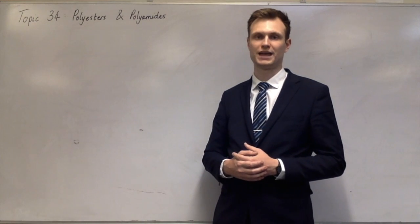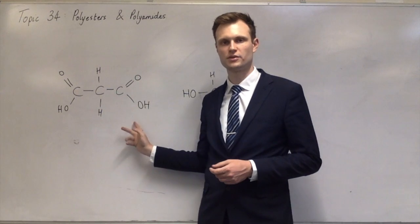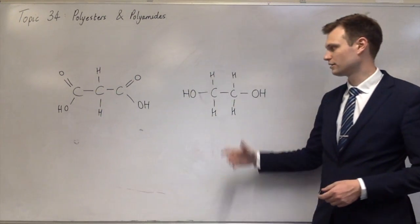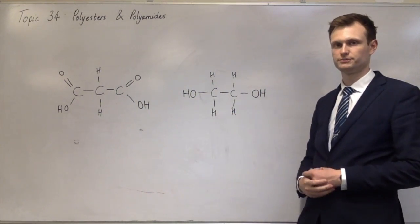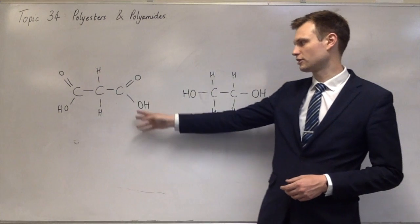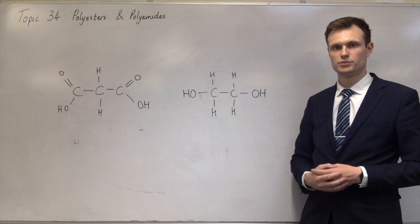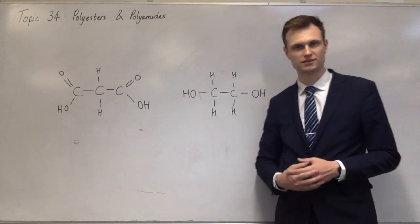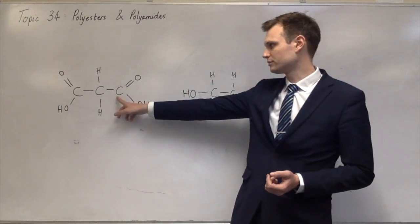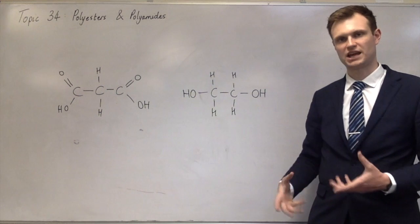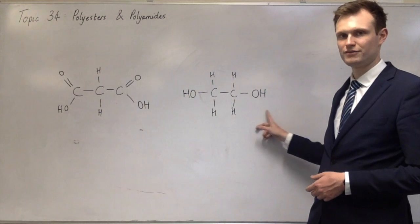Let me give you an example of a polyester. This is propanedioic acid — three carbons with two carboxylic acids on it — and then ethan-1,2-diol, two carbons with an alcohol on both sides. The way these react is the same way as making an ester. The OH and this hydrogen come off to make water — that's why it's called condensation, because it produces water — and you end up with a bond between the carbon and this oxygen, the same way as with esterification.